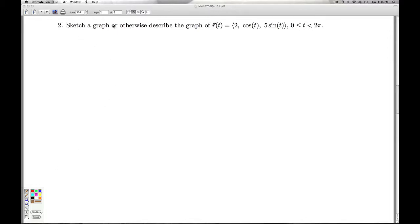Okay, and number two, we're asked to sketch a graph or otherwise describe the graph of this vector-valued function. One thing we can do is just bring it out and treat it as a parametric. We have the x component is always equal to 2. So no matter what's happening with t, the x-coordinate on the graph is always going to be 2.